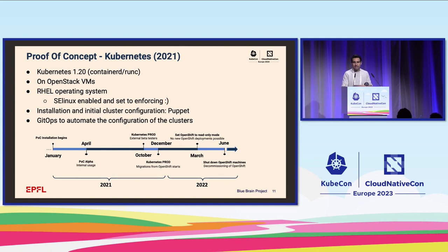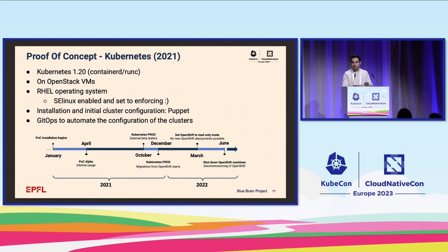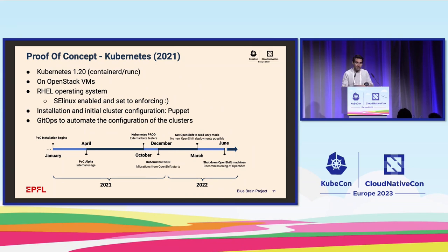This is why a change was needed. At the beginning of 2021 we started this proof of concept based on vanilla Kubernetes — in this case Kubernetes 1.20 with containerd and runc. From the beginning of the PoC we had a few things clear: we wanted to be virtualized running on our existing private cloud OpenStack, we wanted to use Red Hat Enterprise Linux as the OS with SELinux enabled and set to enforcing, and we would use Puppet for the installation and initial cluster configuration — no difference from any of our other services. We would also use some kind of GitOps approach to automate the configuration of the cluster.